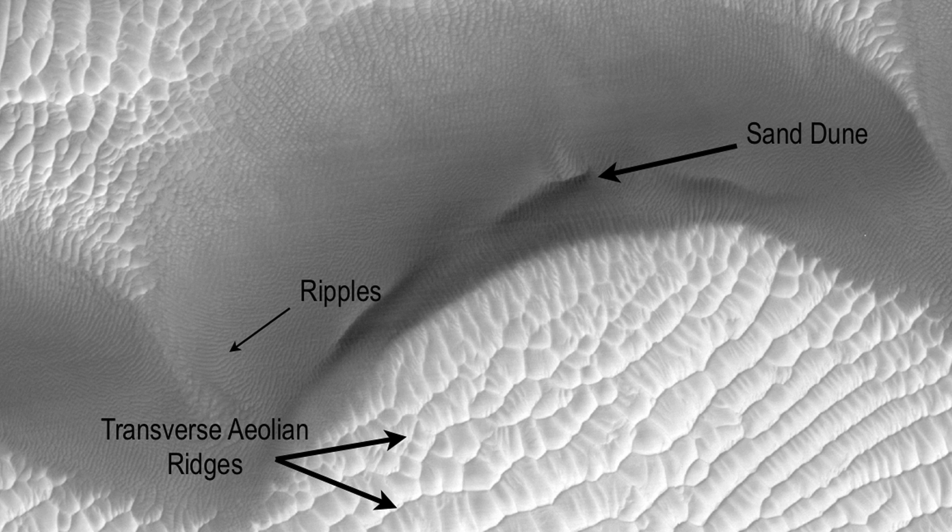Ripples, transverse aeolian ridges known as TARs, dunes, and what are called Dra. All of these are visible in this Juventus Chasma image. Ripples are the smallest bedforms, less than 20 meters, and can only be observed in high-resolution images acquired by HiRISE and are commonly superposed on many surfaces.